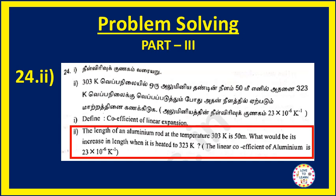Now let us take question number 24 of part 3. In this we have taken the second sub-question. They have given the length of an aluminum rod at the temperature 303 K is 50 meter. What would be its increase in length when it is heated to 323 K? And also they have given the linear coefficient of aluminum is 23 times 10 power minus 6 K to the minus 1.